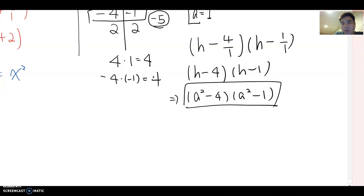Actually, this one we can factor one more time. a squared minus 4 becomes (a + 2)(a - 2), and we also have (a squared - 1), which gives us (a - 1).